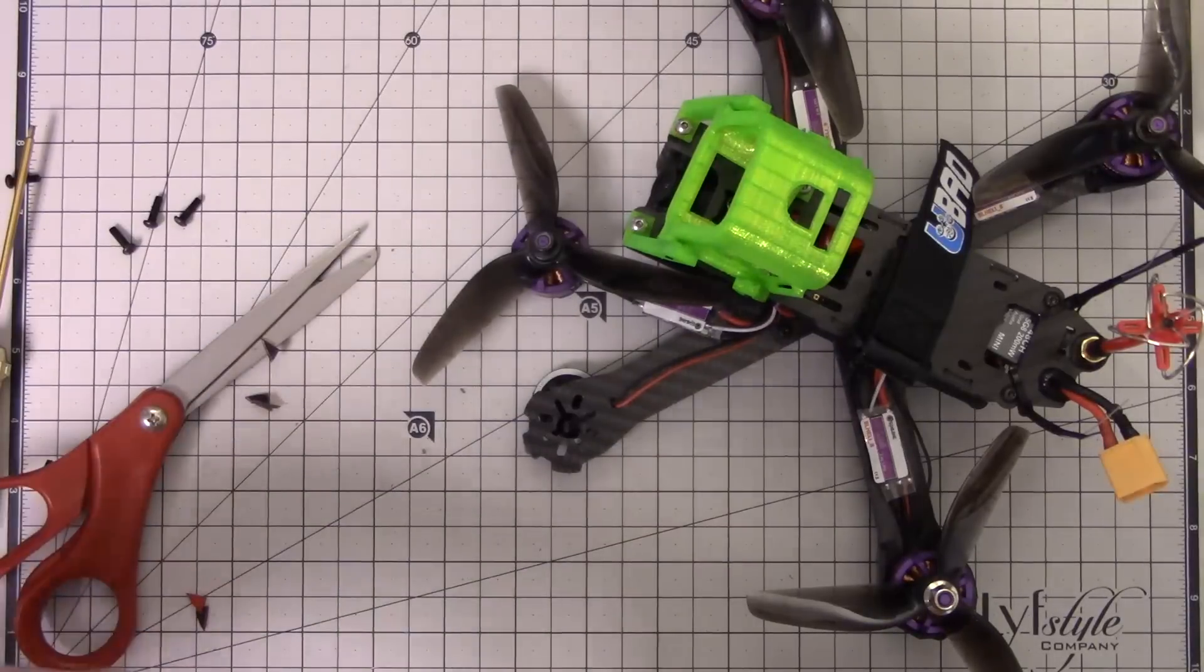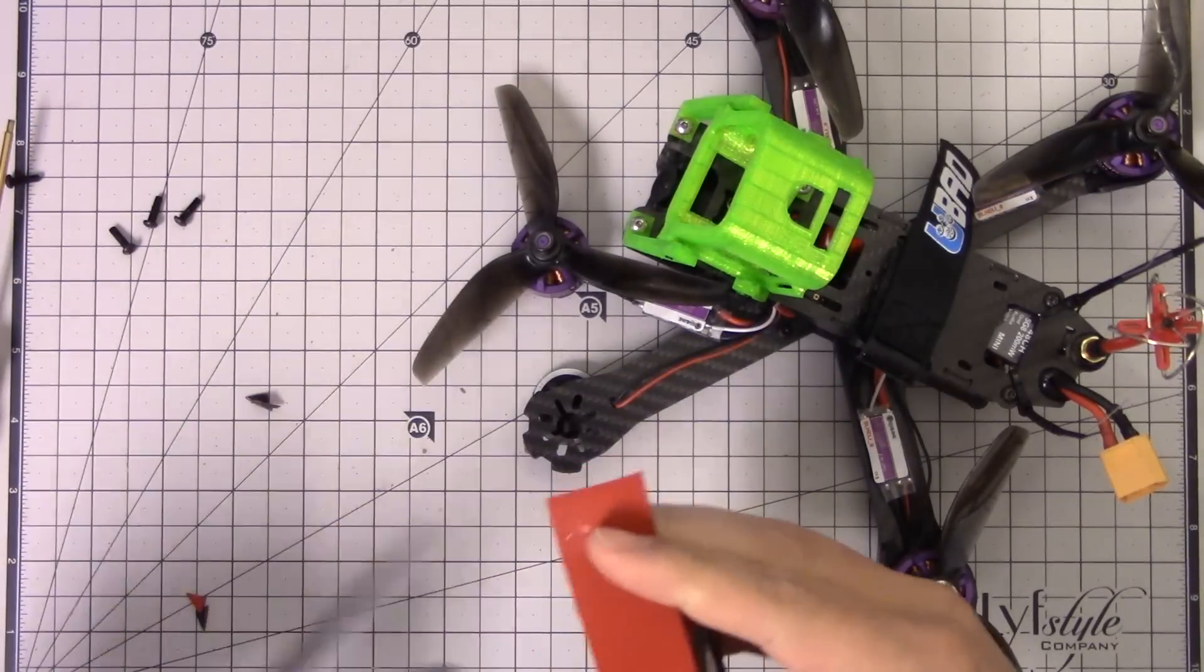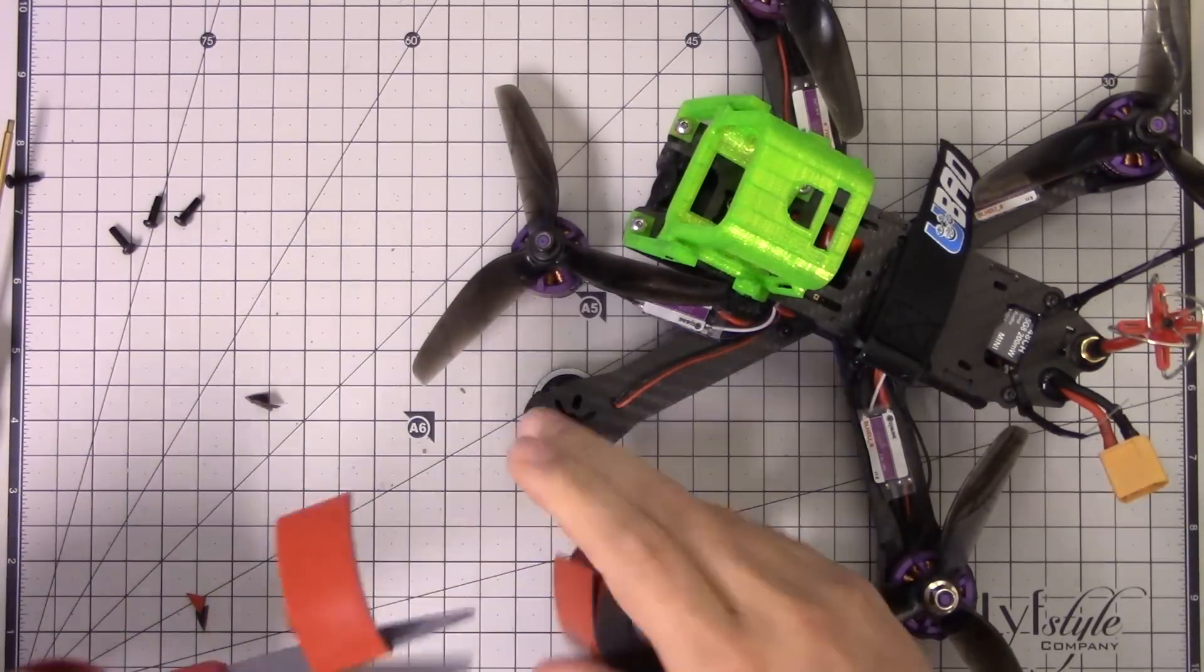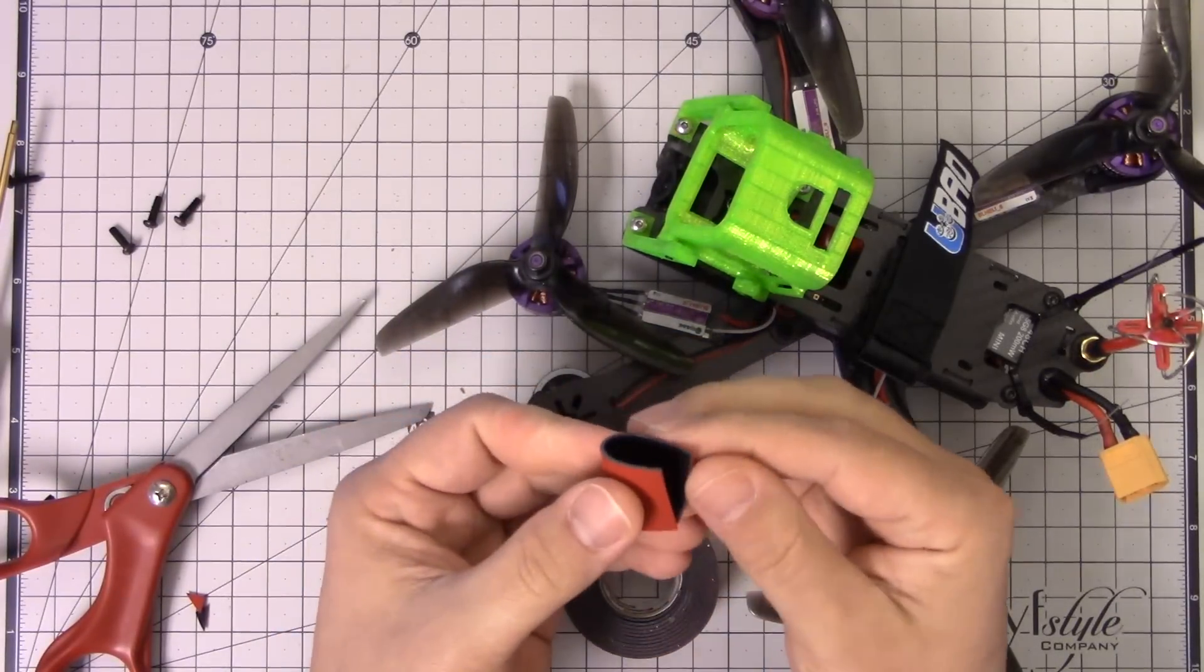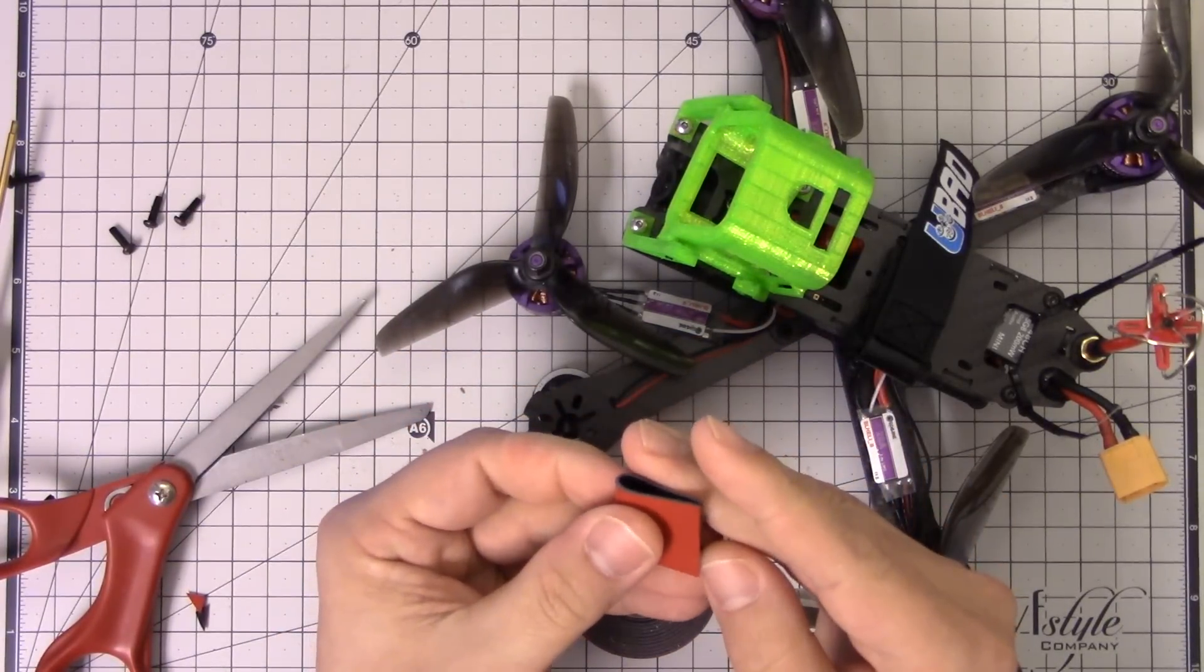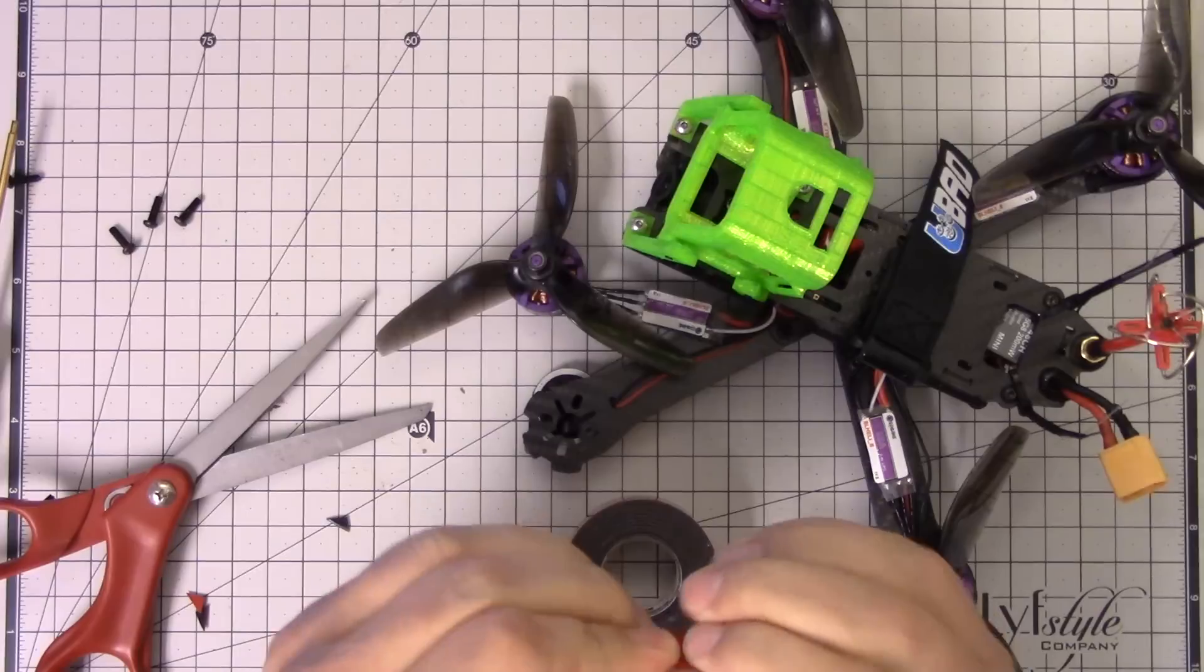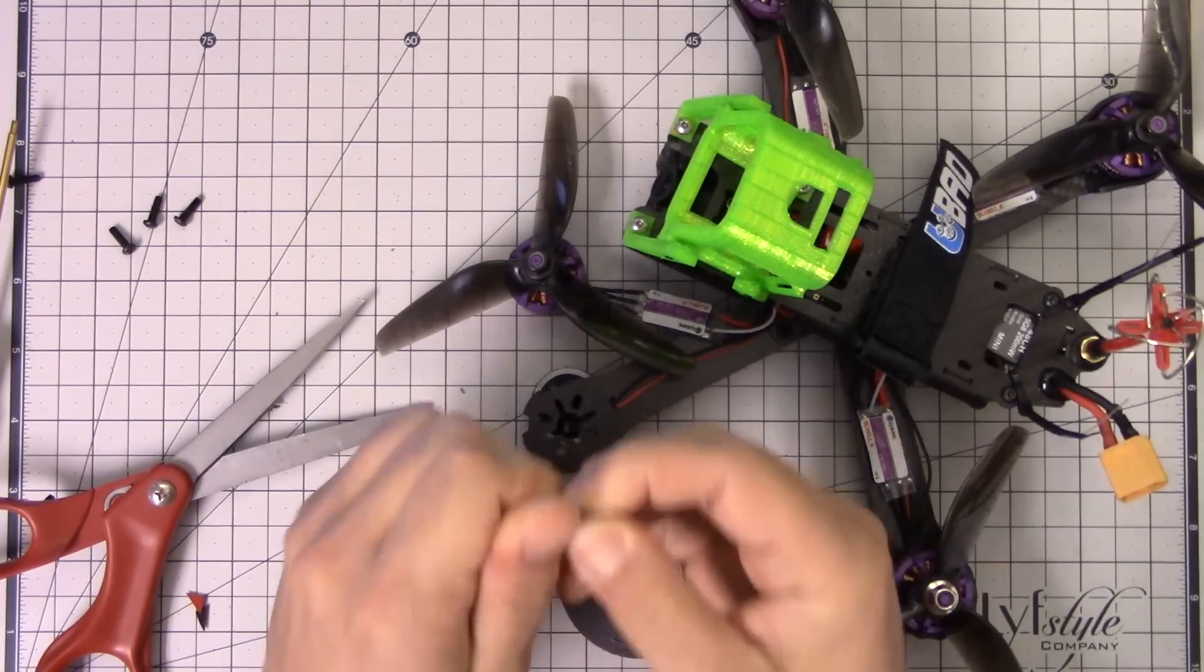What I did was I took a length of this tape about twice as long as I was going to need for the square that I was going to put under the motor. I folded it in half, and that's it. It's self-adhesive, so it sticks to itself, and it gives you maybe a millimeter to a millimeter and a half of padding.